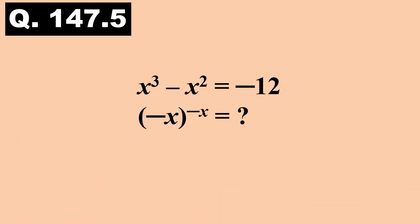Now, the last question, question number 147.5. x cubed minus x squared is equal to minus 12. Repeat, difference of cube of x and square of x is equal to minus 12. Find minus x power minus x. Timer starts now.